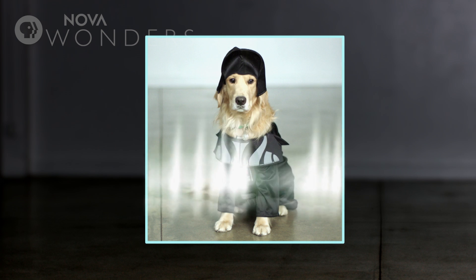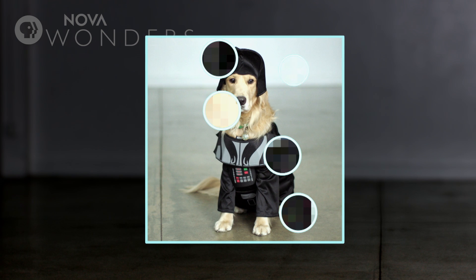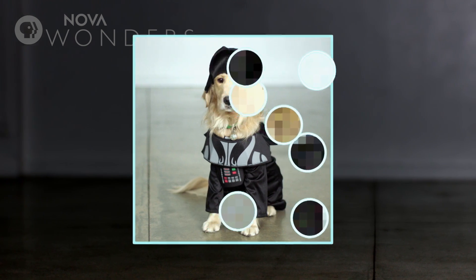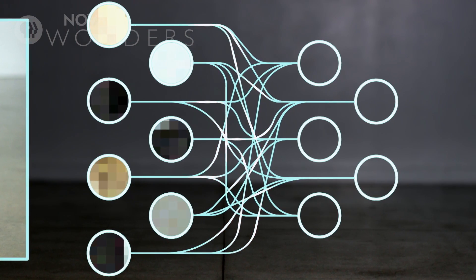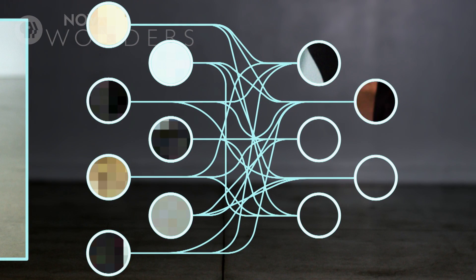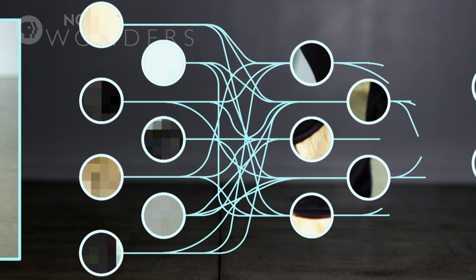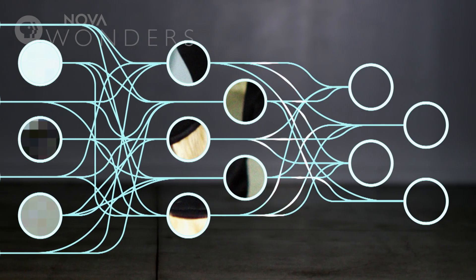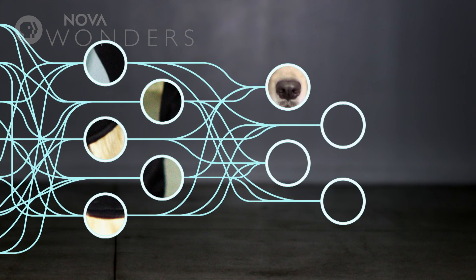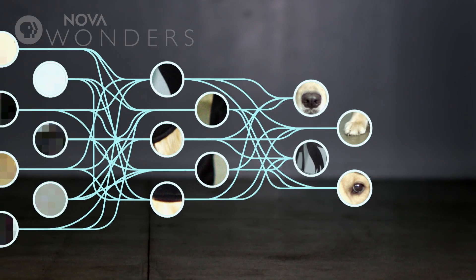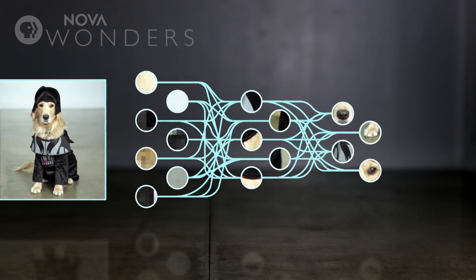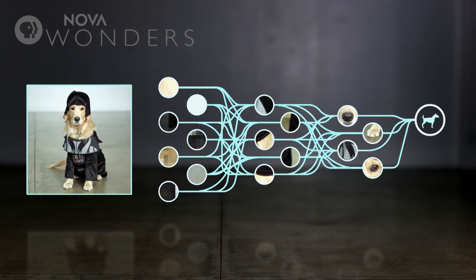The input layer is kind of like your retina, the part of your eye that senses light and color. In the case of this photo of Buddy, it senses dark over there, light over here. This information gets fed to the next layer, which can recognize basic features like edges. That then goes to the next layer, which recognizes more complex features like shapes. Finally, based on all of this, the output layer labels the image as either dog or not dog.